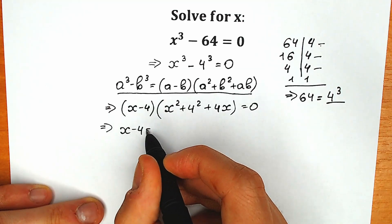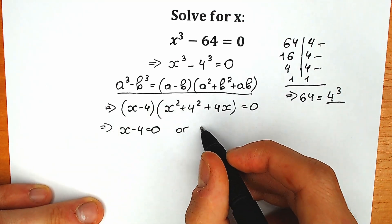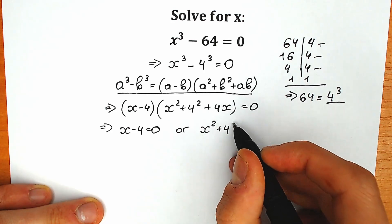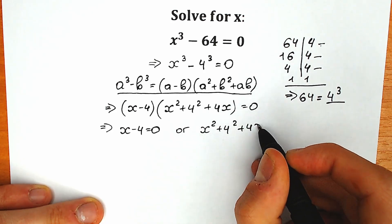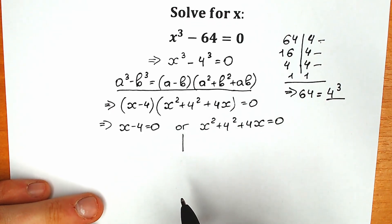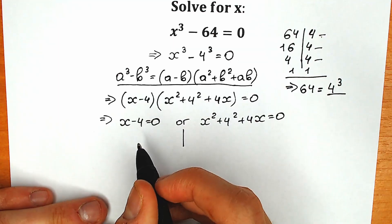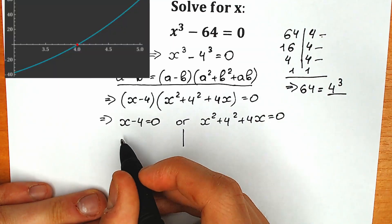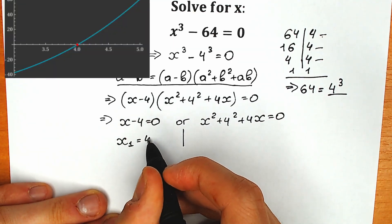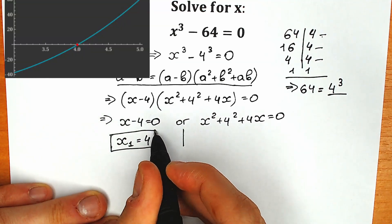So we have x minus 4 equal to zero, or the second parenthesis x-square plus 4x plus 4-square equal to zero. We have two cases. Starting with the easy one on the left: x₁ equals 4. This is a very easy root for us.